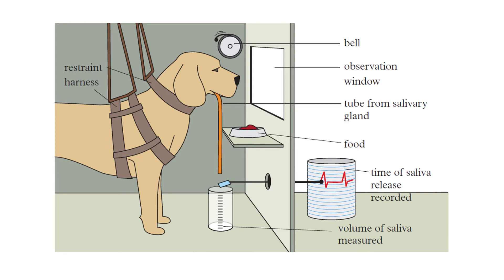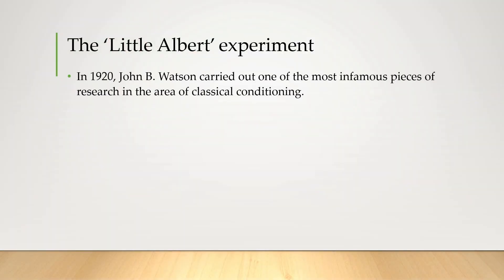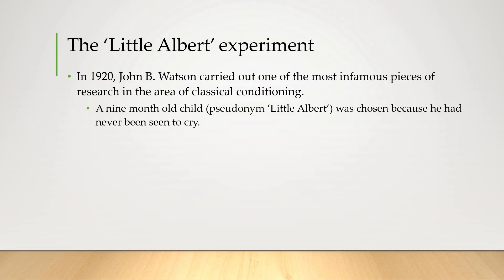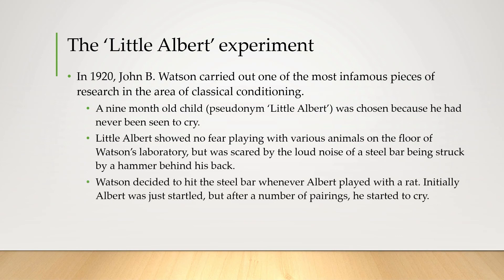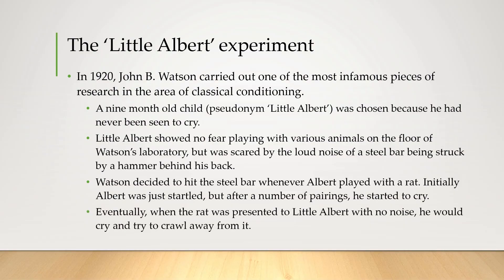An even more stark example was an experiment conducted by John B. Watson. In 1920, Watson carried out probably one of the most infamous pieces of research in classical conditioning. A nine-month-old child, now called Little Albert, was chosen because he had never been seen to cry. Watson let Albert play with various animals — a dog, a rabbit, a rat, which Albert seemed to enjoy. But whenever Watson made a loud noise by striking a steel bar with a hammer behind Albert's back, that would frighten him. So Watson decided to hit the steel bar whenever Albert played with the rat. Initially Albert was just startled, but after a number of pairings he would cry. Eventually when the rat was presented with no noise, he would cry and try to crawl away. This is a clear case of classical conditioning — the rat was paired over and over with a negative stimulus and eventually became associated with a negative response.